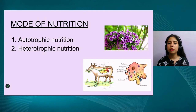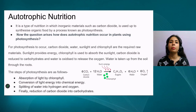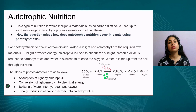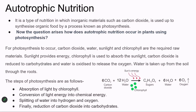Autotrophic nutrition is shown by green plants. These plants take up inorganic materials such as carbon dioxide and synthesize organic food by the method of photosynthesis. Breaking down 'photosynthesis': photo means light, and synthesis means to make something. So using light to synthesize something is photosynthesis. Only green plants can use light for this process.